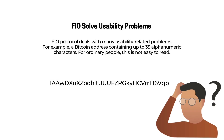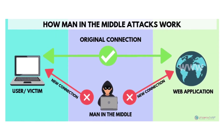PO Protocol deals with many usability-related problems. For example, a Bitcoin address containing up to 35 alphanumeric characters — for ordinary people, this is not easy to read. Usually it means that people copy and paste it into their wallets. This is a security risk in itself because man-in-the-middle attacks may be used by hackers to replace a given public address.